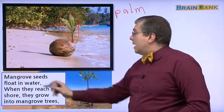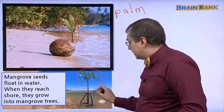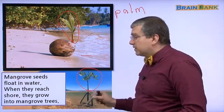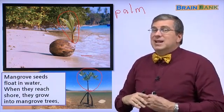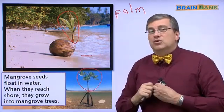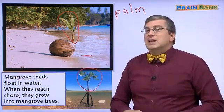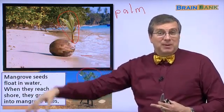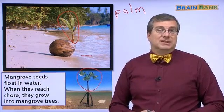Also, mangrove seeds float in water. This is a mangrove tree. When they reach shore, they grow into mangrove trees. Mangrove trees grow in the ocean, next to the land. They're very important — they help protect the land from the water moving back and forth. So we saw many different ways that seeds travel: birds eat them and drop them elsewhere, animals carry seeds to other places, and water carries seeds to different places too.